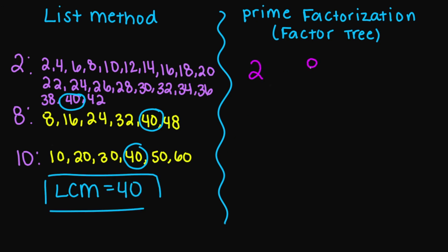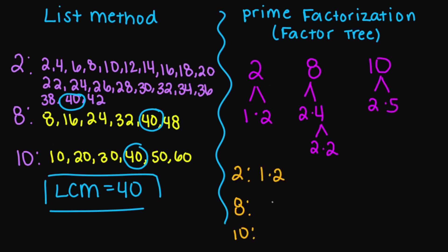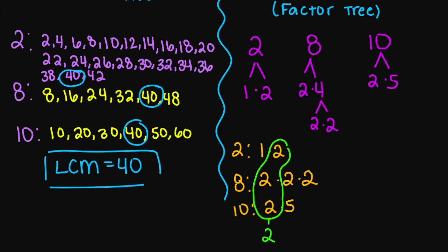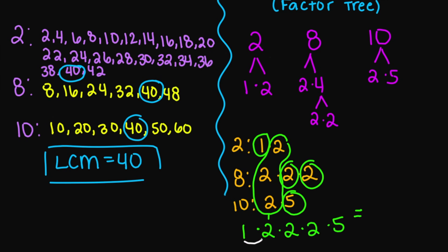So let's try the factor tree. My two is one times two. My eight is two times four, and my four is two times two. For my 10, we have two times five. So two is one times two, eight is two times two times two, and my 10 is two times five. I have three twos I can match up, so I write one two one time. The remaining add-ons are another two, another two, and a five. One times two is two, two times two is four, four times two is eight, eight times five gives us 40. So your LCM using this method is also 40.